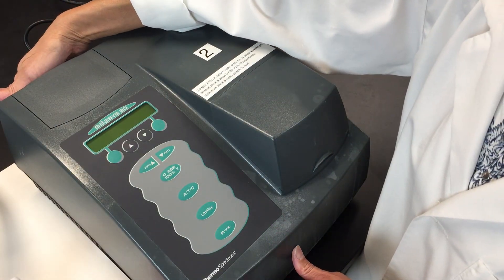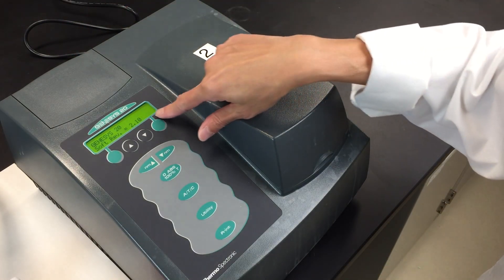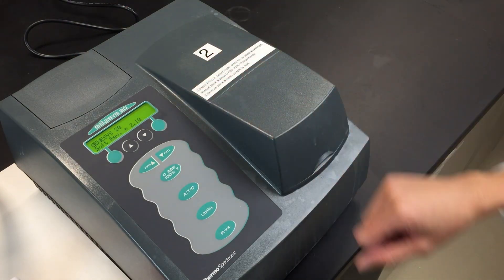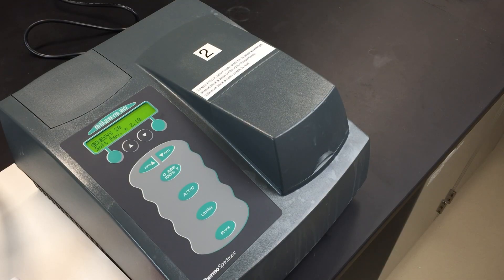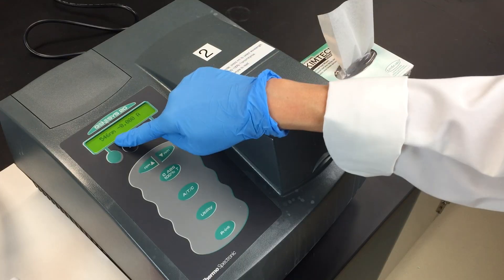Start by turning on your spectrophotometer and letting it warm up. This is what the screen looks like when you first turn it on. If you don't let the spectrophotometer warm up properly, you'll get an error message when you try to use it. This is what the screen looks like when it's warmed up.